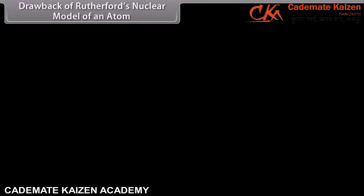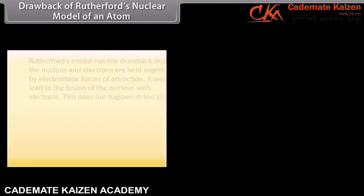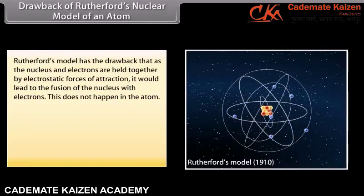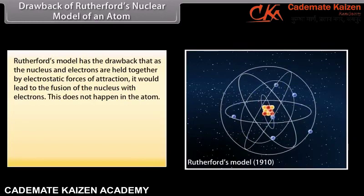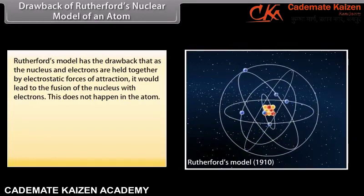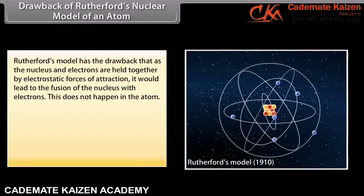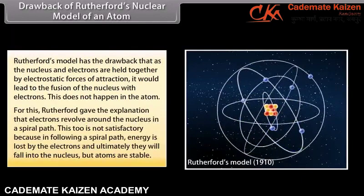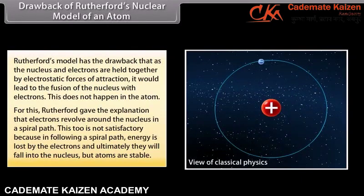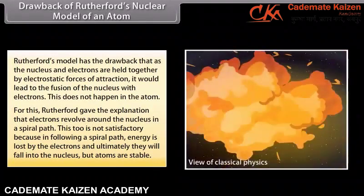Drawback of Rutherford's Nuclear Model. Rutherford's model has the drawback that as the nucleus and electrons are held together by electrostatic forces of attraction, it would lead to the fusion of the nucleus with electrons. This does not happen in the atom. Rutherford gave the explanation that electrons revolve around the nucleus in a spiral path. This too is not satisfactory because in following a spiral path, energy is lost by the electrons and ultimately they will fall into the nucleus — but atoms are stable.